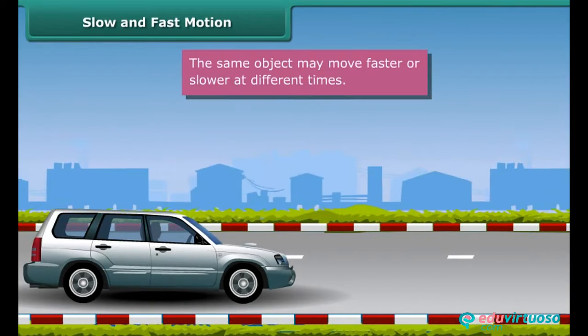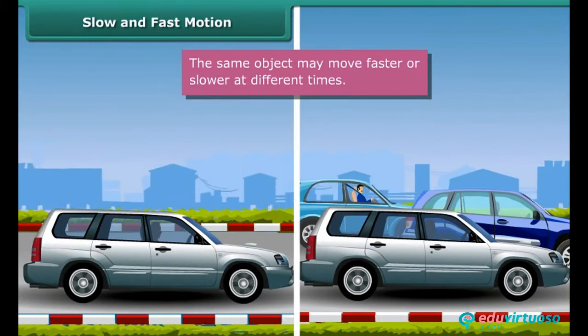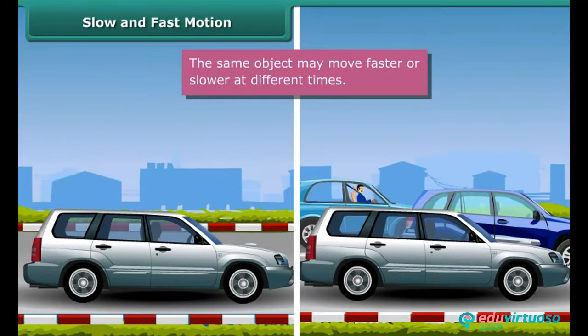Now the same taxi moves fast on an empty road and slow on a busy road. Thus, the same object can move fast at one time and slow at another time.